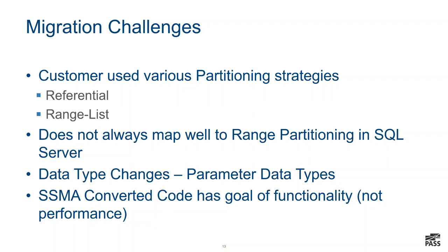Referential partitioning works like this: say you have an order header table with customer number, order number, salesperson ID, and a date. Then you have an order details table with order number, line number, item number, quantity, and price — but no date. You want to partition both tables the same way on that date, but there's no date in the details table. In Oracle you can implement referential partitioning and partition both your header and details on that same date from the header. SQL Server only has range partitioning, so this is a little more difficult to implement.